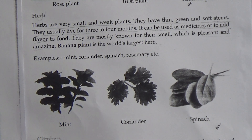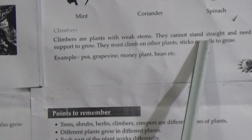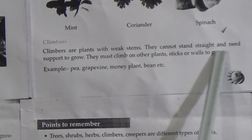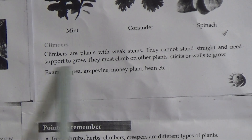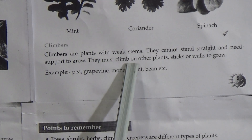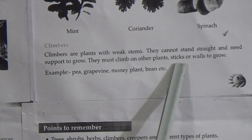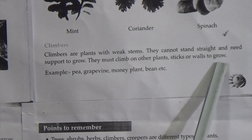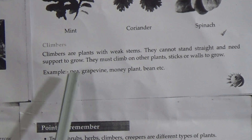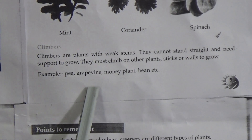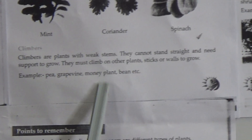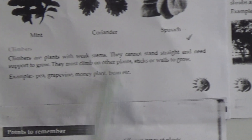Now here is climbers. Climbers are plants with weak stems — they cannot stand straight and need support to grow. They must climb on other plants, sticks, or walls to grow. Examples: pea, grapevine, money plant, bean, etc.